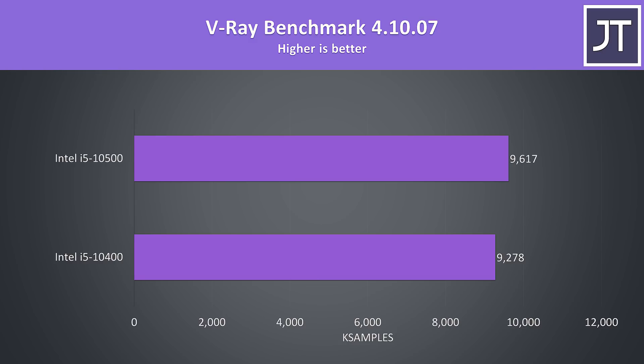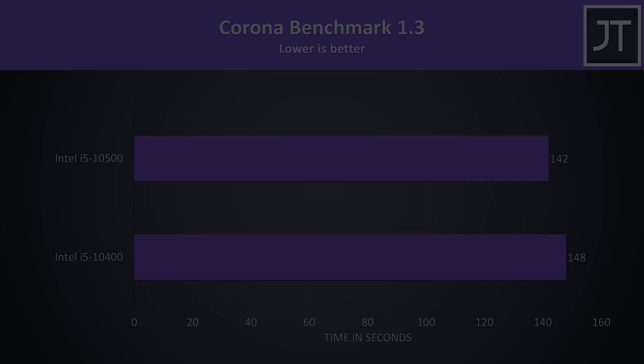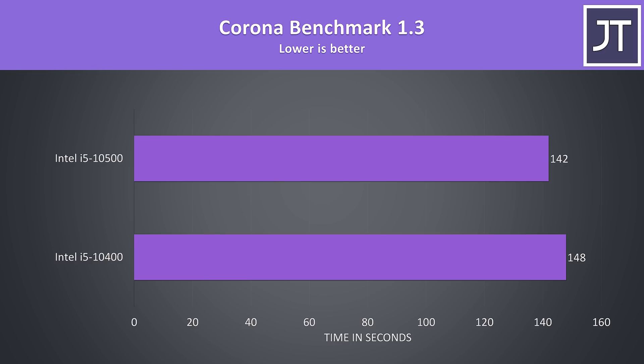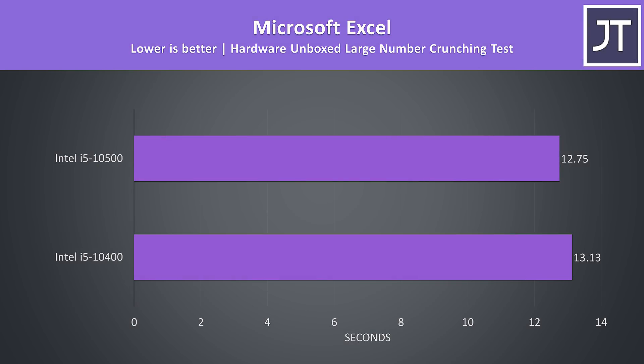The V-Ray benchmark uses the processor to render out a scene, and the extra 200MHz all-core turbo boost speed is only getting us a 4% higher score with the 10500. Likewise, the Corona benchmark also renders out a scene, and again there was a similar 4% speed boost. The differences were even closer in the Hardware Unboxed Microsoft Excel test, where the 10500 was completing the large number crunch test just 3% quicker.